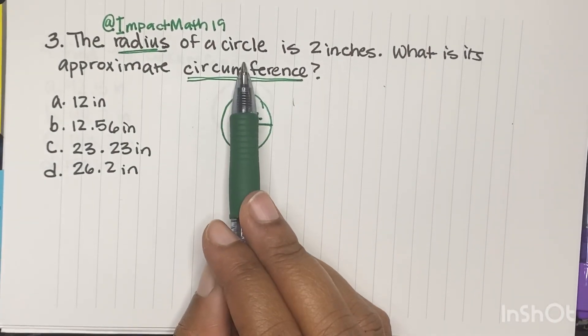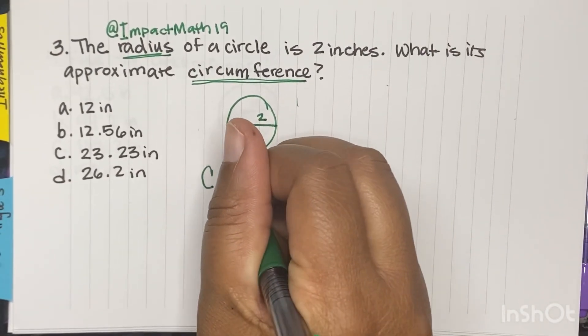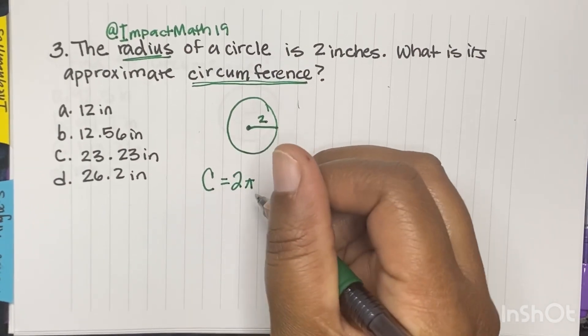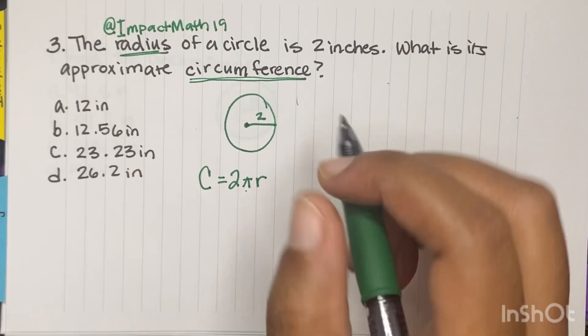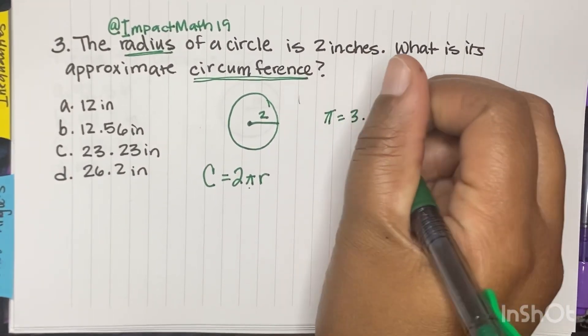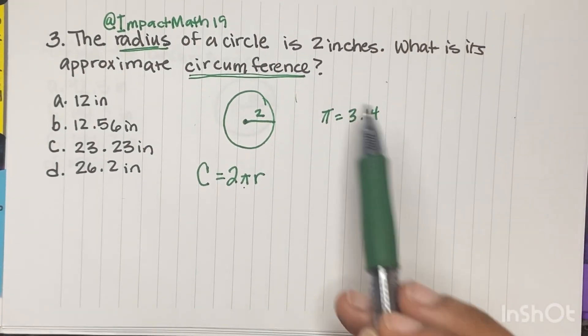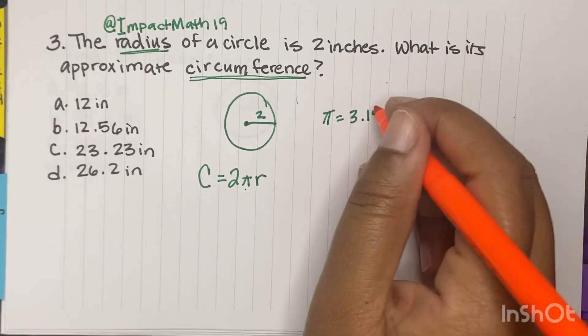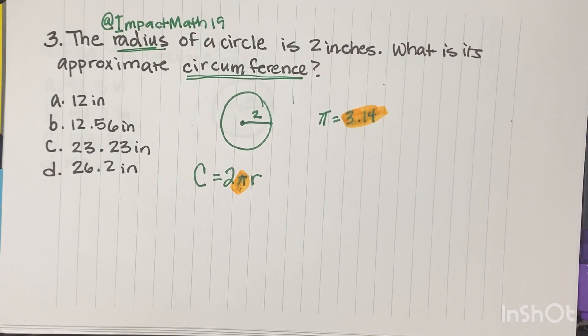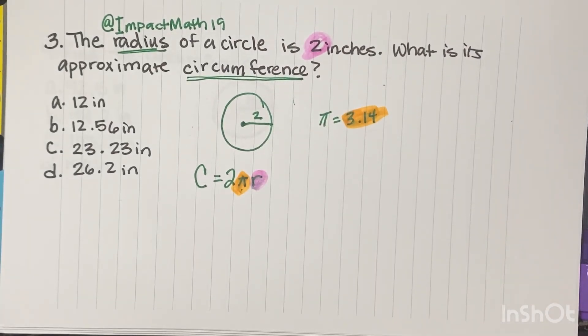Now you have to know these formulas. The circumference formula is C equals 2 times pi times the radius. And pi is a number. Pi is equal to 3.14, and it keeps on going, but we're just going to use 3.14. So we're going to plug in our 3.14 for here, and we're going to plug in our radius, which they told us was 2, in for r.